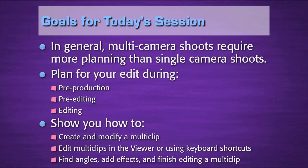In general, multi-camera shoots require much more planning than single-camera shoots, so we're going to look at the planning process purely from the point of view of editing, not production. However, that planning process starts in pre-production, then continues in pre-editing, and through the editing process. Once we get our planning done — which will take about 20 to 25 minutes to present — I'll show you how to create and modify a multi-clip, give you a cookbook for creating your own multi-clips, how to edit multi-clips in the viewer or using keyboard shortcuts, how to find angles inside a multi-clip, how to add effects, and how to finish editing a multi-clip. We'll spend about half our time planning and half our time actually using the software.